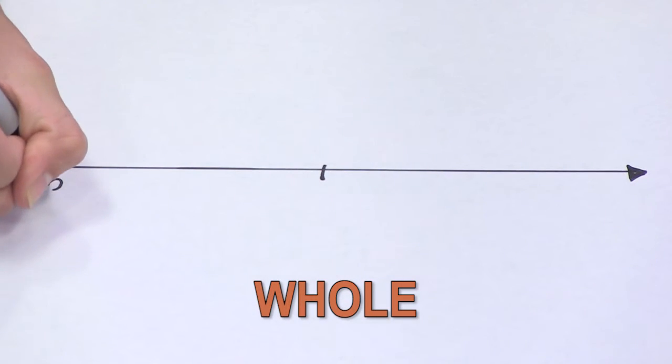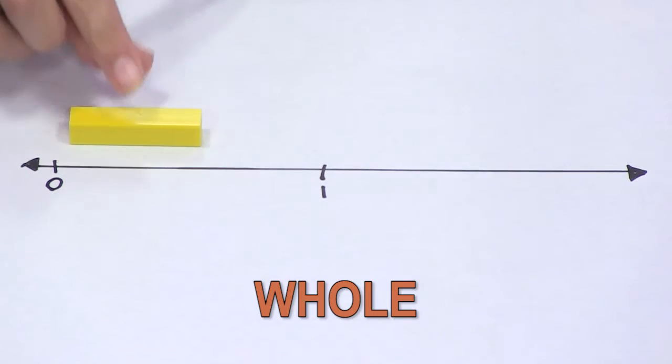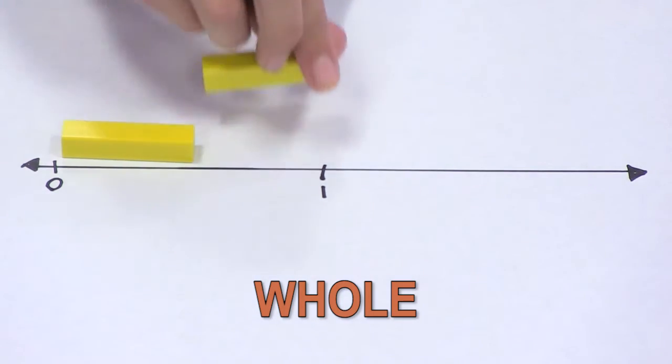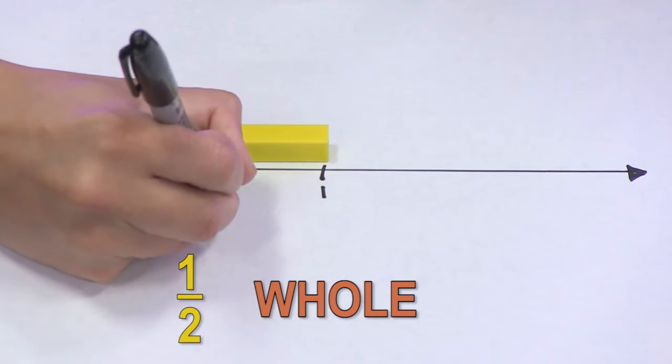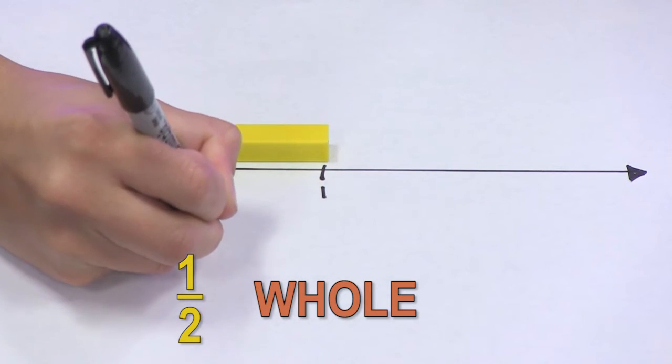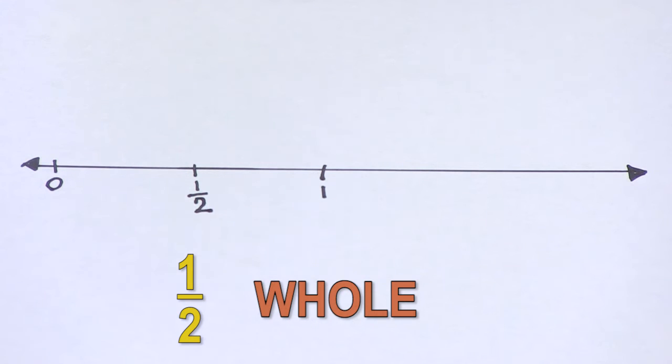Next, I will look at the rods to find what represents one half. The yellow can be used to help me label one half on my number line. Now, each of my partitions are the same length.